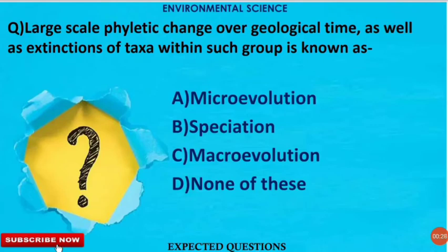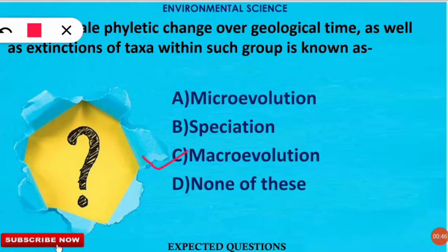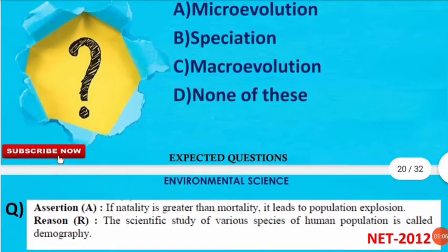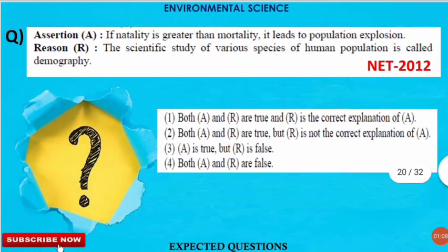The first question is: the large-scale phyletic change over geological time, as well as extinction of taxa within such groups, is known as what? This question is from the genetics part, and the correct option is option C — macroevolution. When there is a large-scale change over geological time and extinction of some taxa, that is called macroevolution.